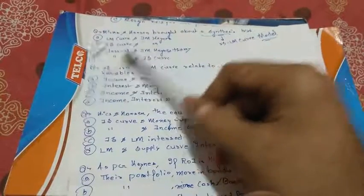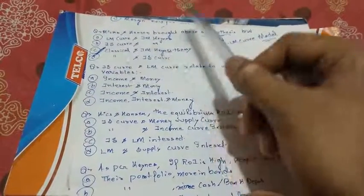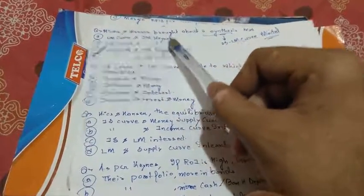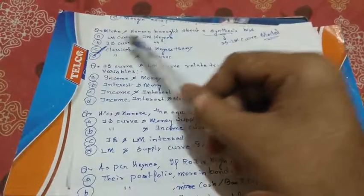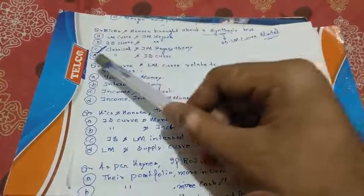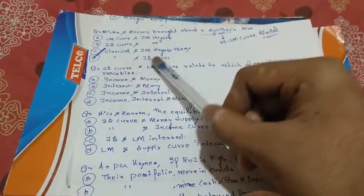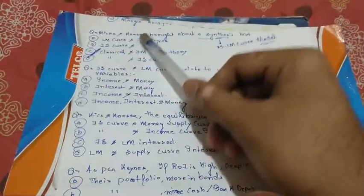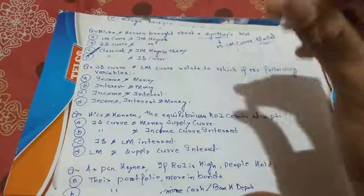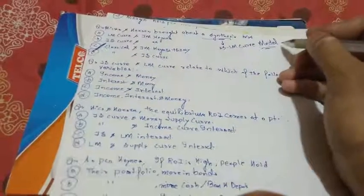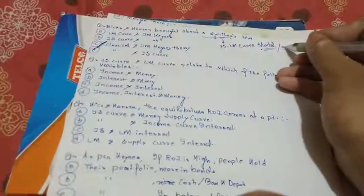Hicks and Hansen brought about a synthesis between the Classical and JM Keynes theories — the answer is option C. The other options include LM curve and JM Keynes, IS curve and JM Keynes, and Classical and IS curves. The Hicks and Hansen theory is also known as the IS-LM curve model.